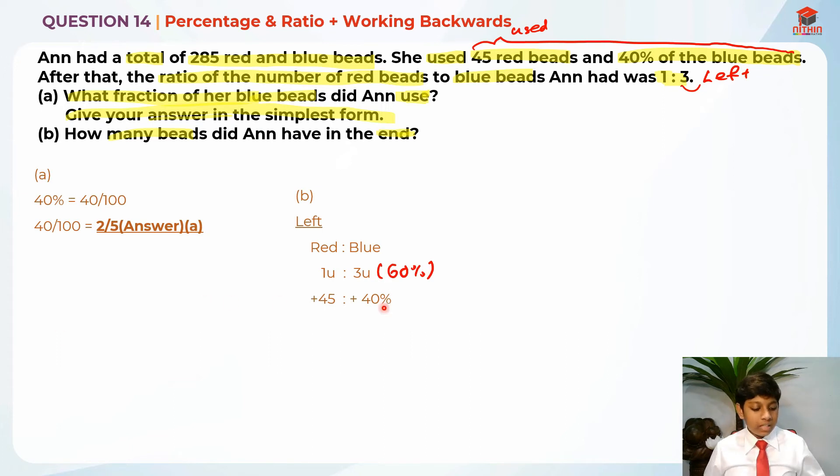60% plus 40% is 100%. We know that 3 units is 60%. So if 3 units is 60%, we know that 20% is 1 unit. In order to find 100%, I'm just going to take 100 divided by 20. So it is 5 units. It is 1 unit plus 45 is to 5 units.